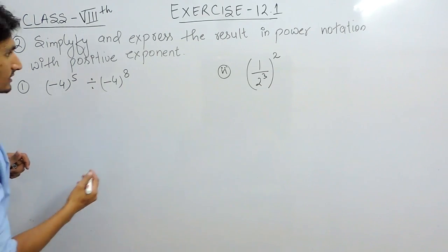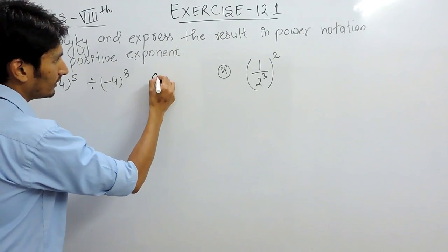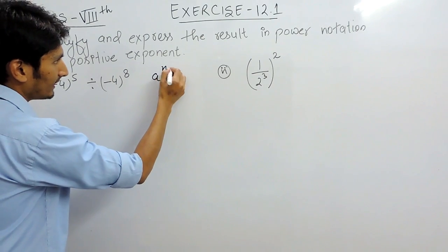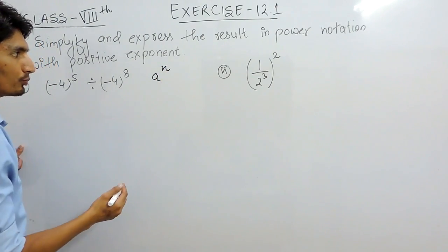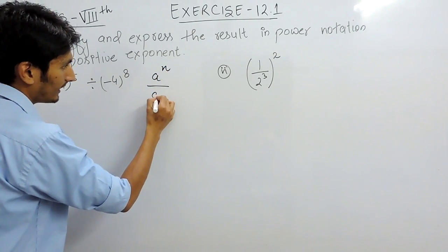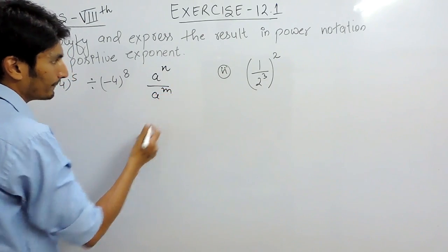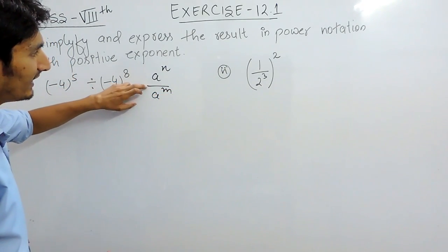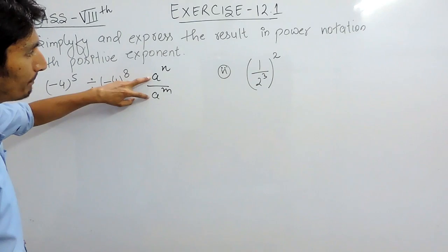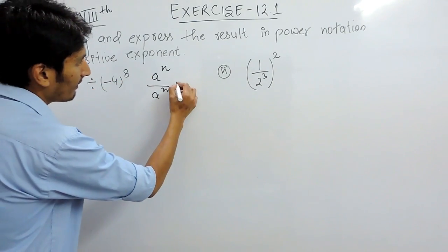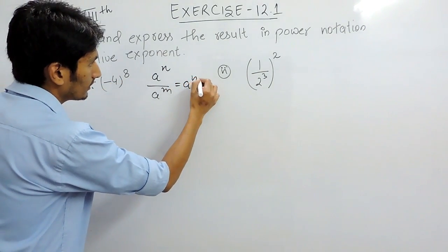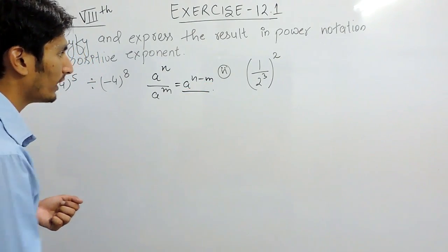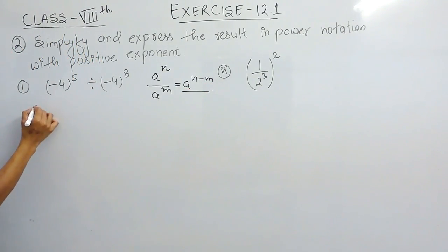For solving this, we are using a formula which says if there is a raised to power n divided by a raised to power m, and if two numbers are divided with the same base, then the powers are subtracted. So we are using this formula here.